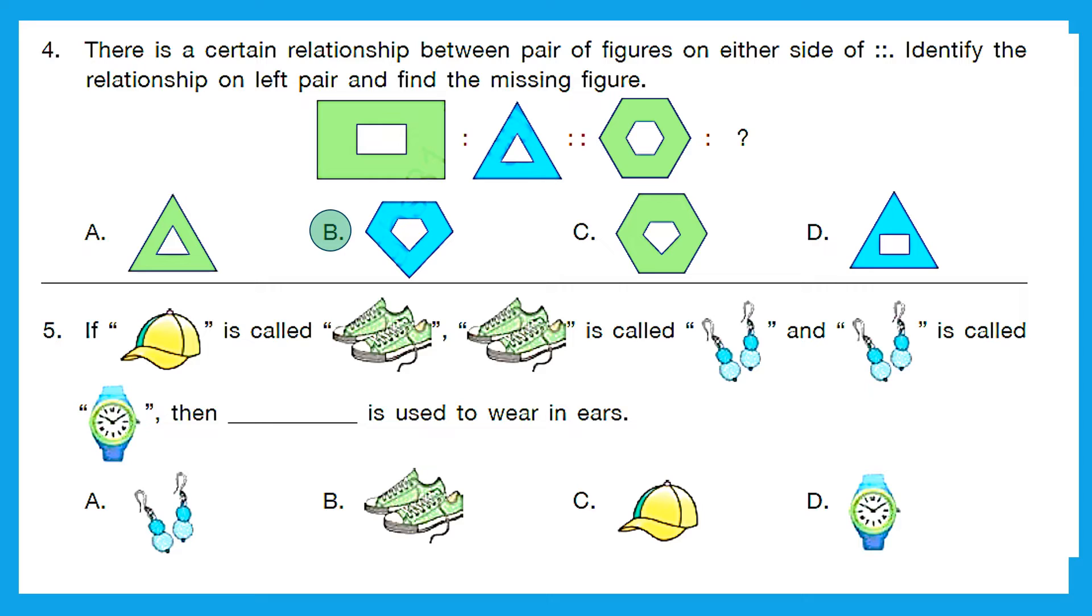Question 5. If cap is called shoes, shoes is called earrings and earrings is called watch, then dash is used to wear in ears. So what do we wear in ears? It is earrings. And what are we calling earrings over here? We are calling earrings watch. So option D is the right answer.